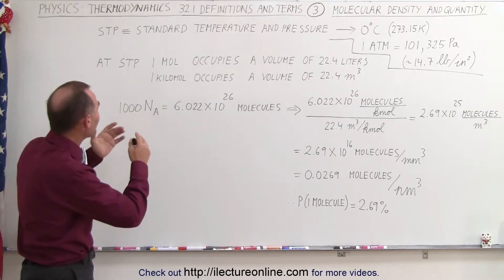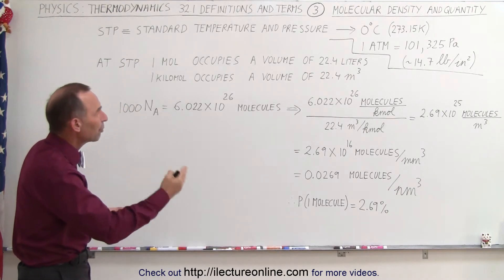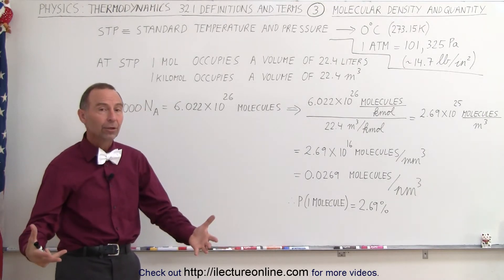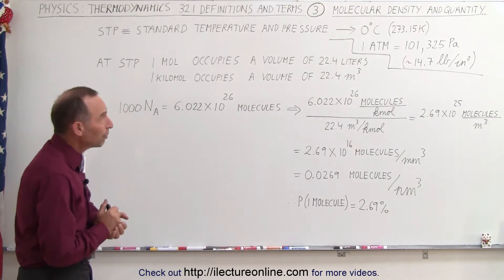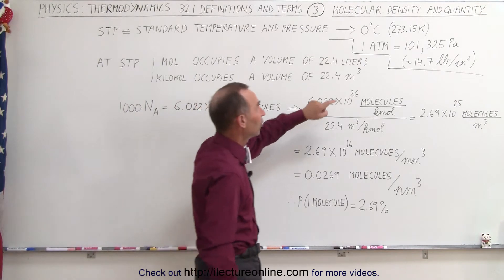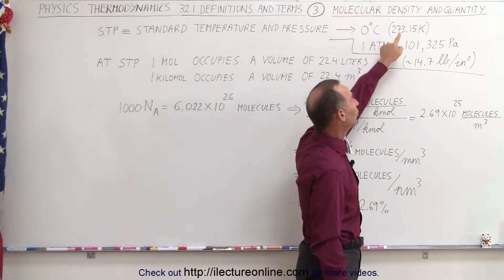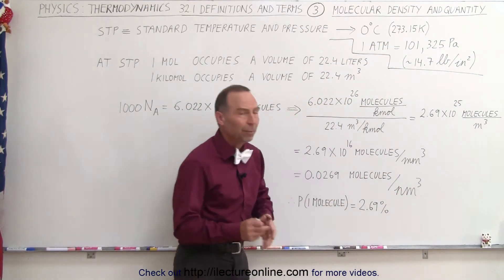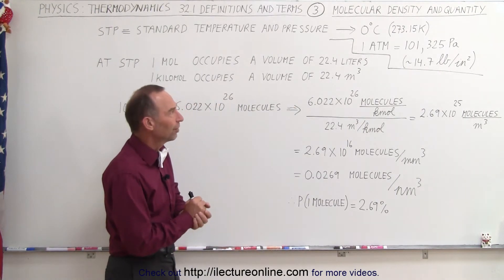First, let's define STP — standard temperature and pressure. How much gas do we have in a container when we are at standard temperature and pressure? Standard temperature is zero degrees centigrade, which is 273.15 kelvin. Typically, we just drop the 0.15 and just call it 273 kelvin.